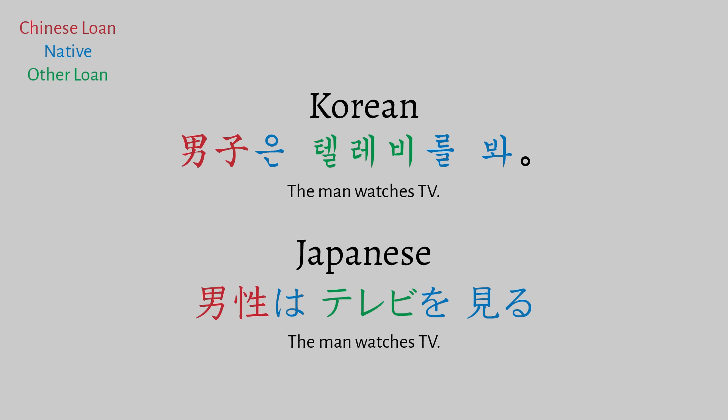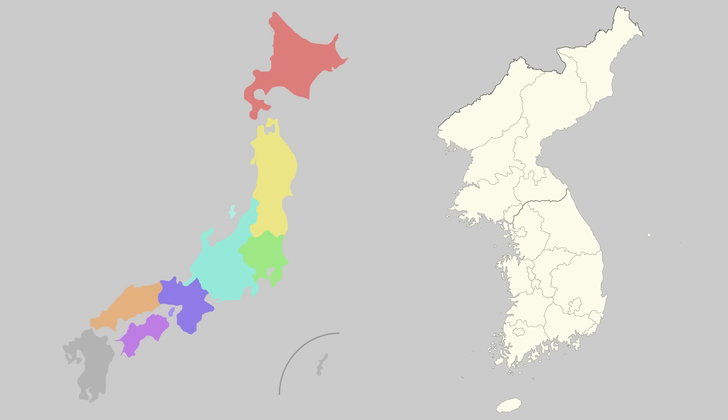Come the 20th century, a mixed script would become the norm in both Korea and Japan. In Korea, hanja was used for Sino-Korean words only, while native words, non-Chinese loanwords, and conjugations were written in hangul. In Japan, kanji was used for content words, while hiragana was used for particles, conjugations, and some native words, while katakana was used for non-Chinese loanwords.